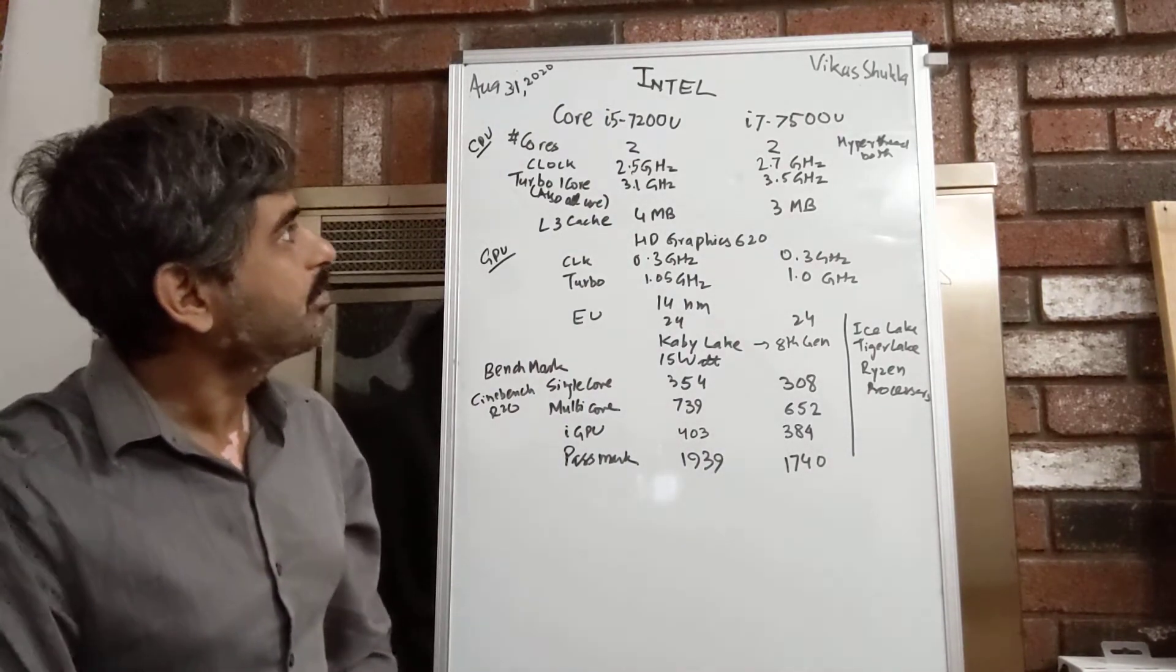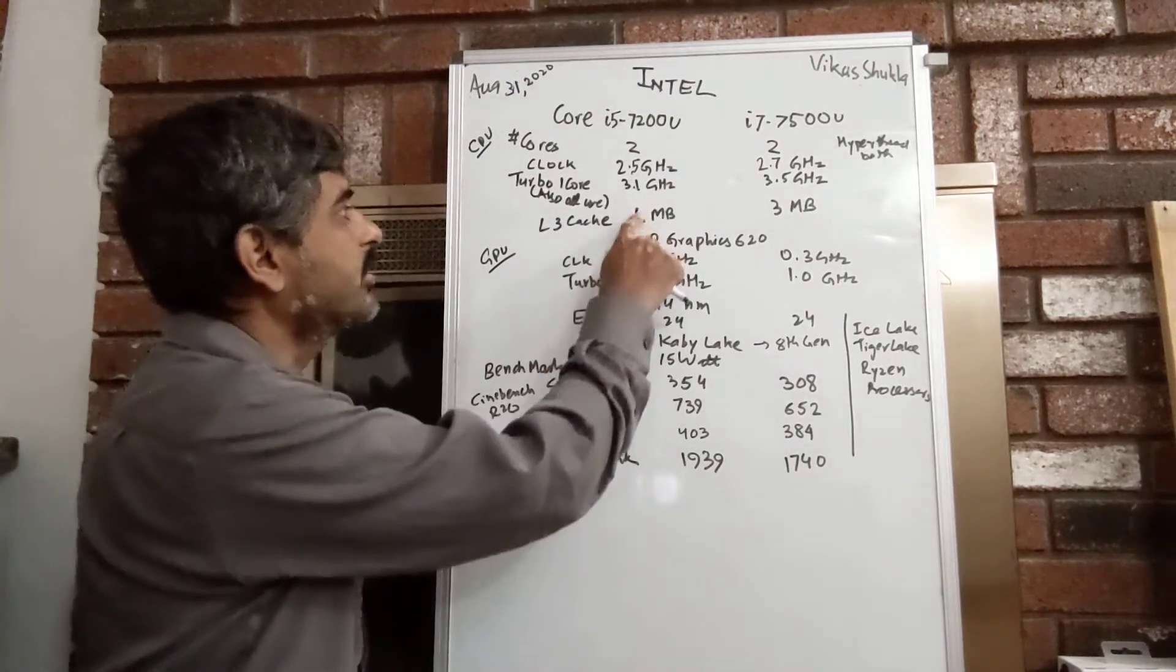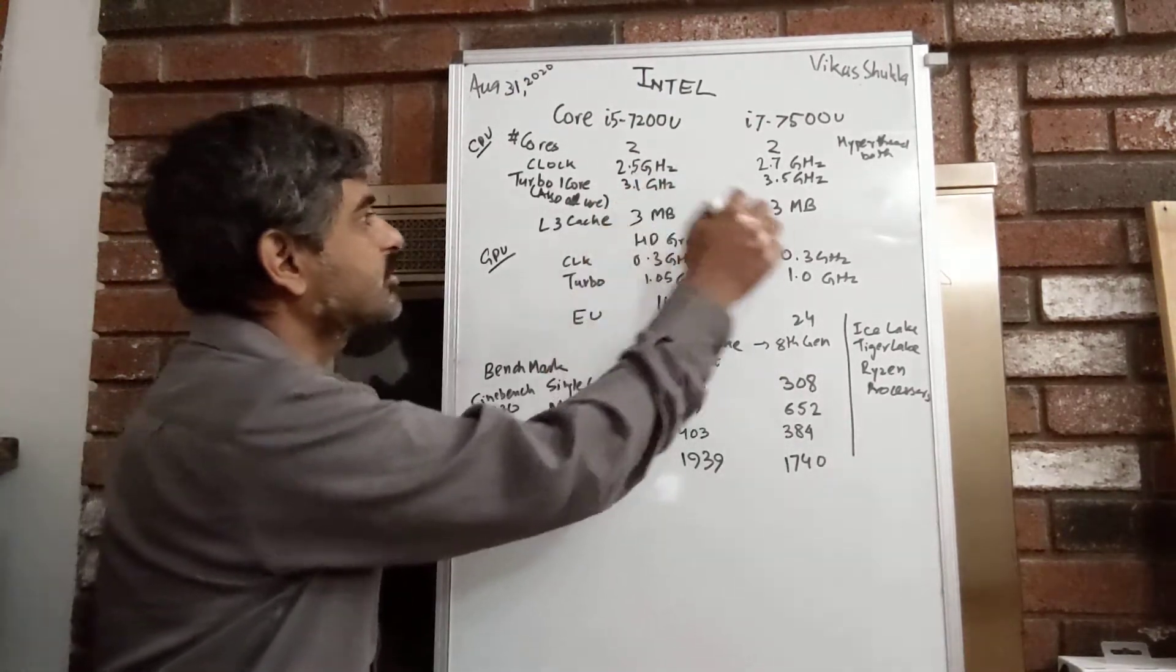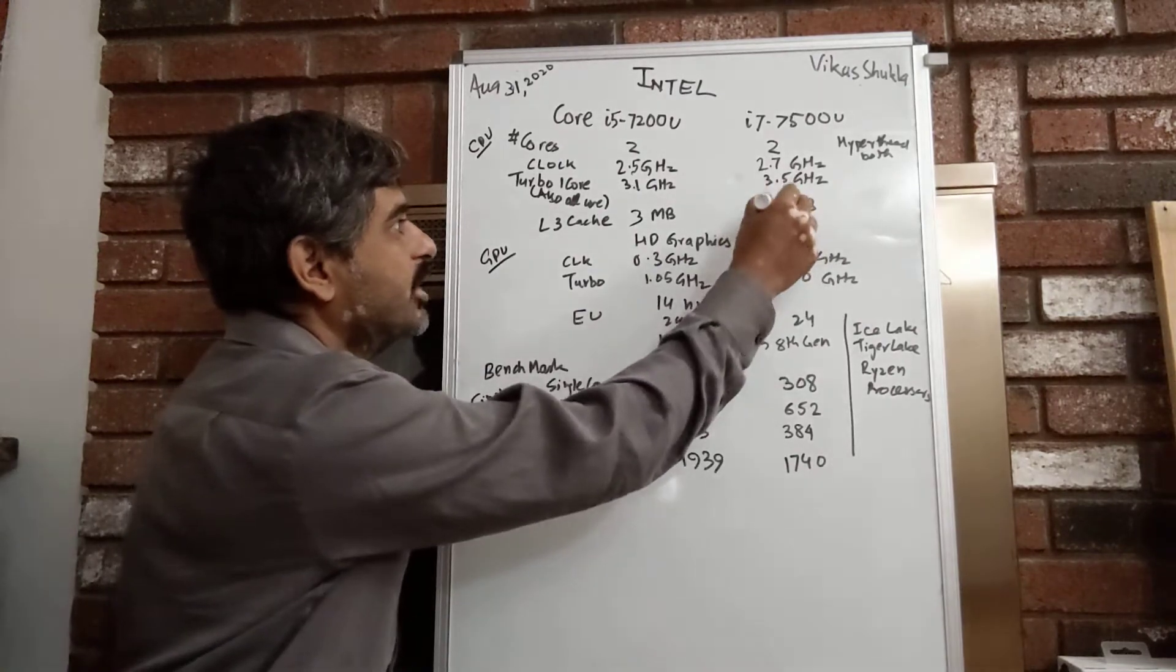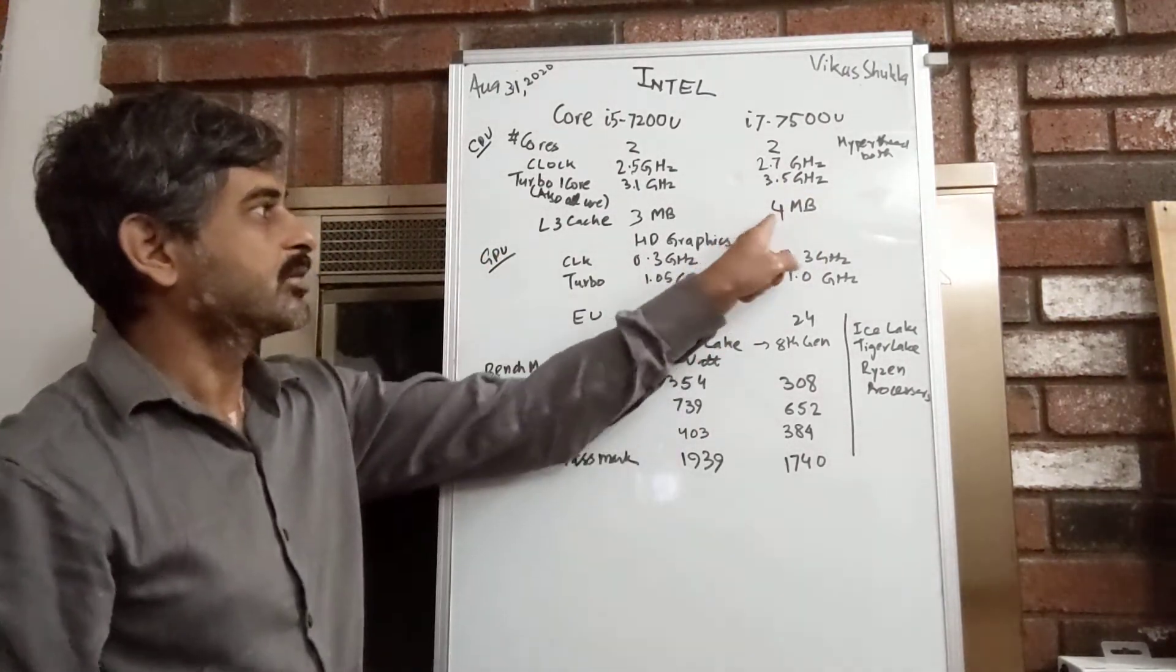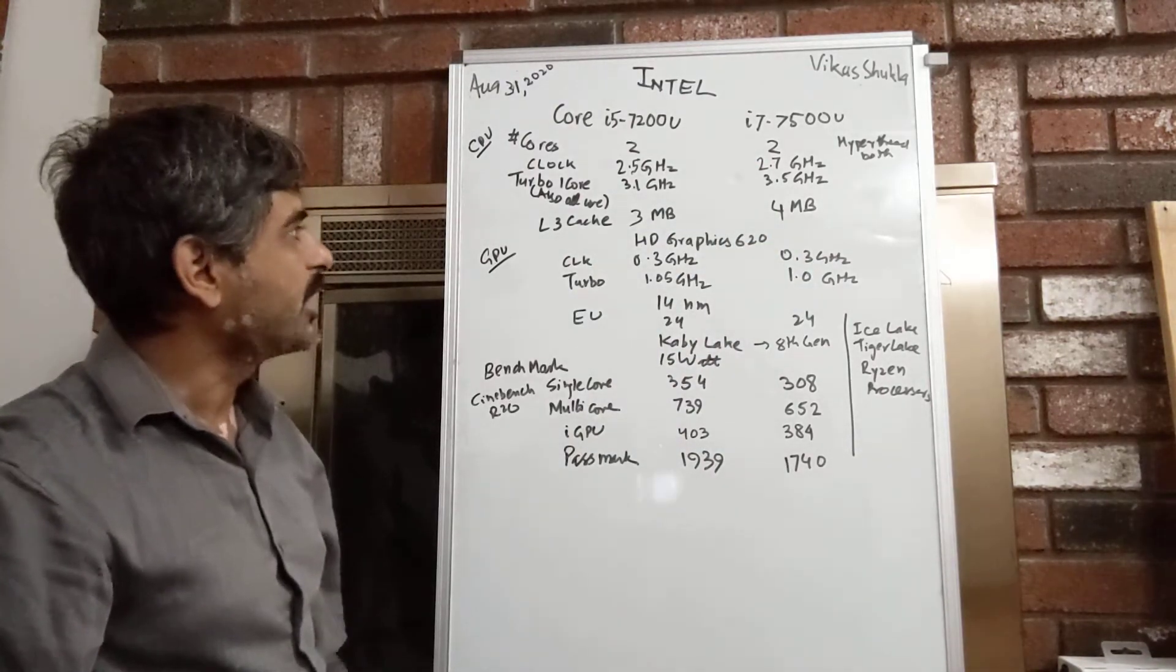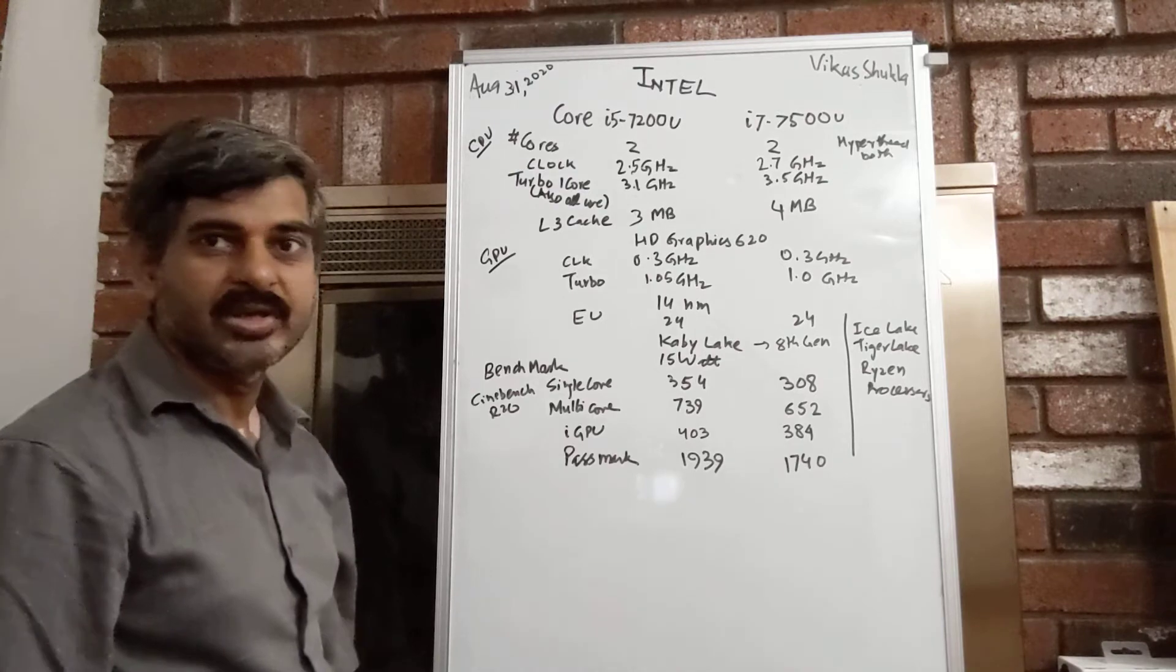Another thing, I think I messed up this one. We should have 3 MB L3 cache here and 4 MB L3 cache here. This is another way the i7 could be faster by providing a larger L3 cache memory.